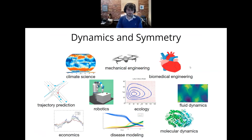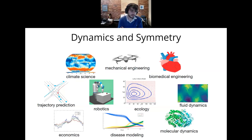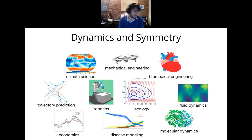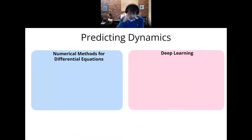Thank you very much for the introduction. I have a bunch of different application domains that a lot of people care about. All of these domains have two things I'm interested in: they all contain some dynamical systems and they all contain some symmetries. What people want to do is make predictions or classifications about these dynamical systems, and usually this is very hard — making predictions about the climate, the motion of vehicles, or the movement of the stock market are all very difficult problems.